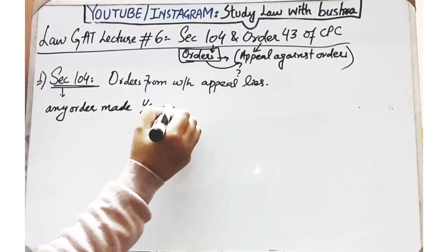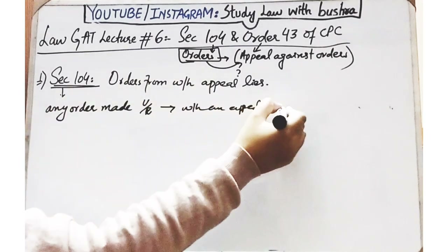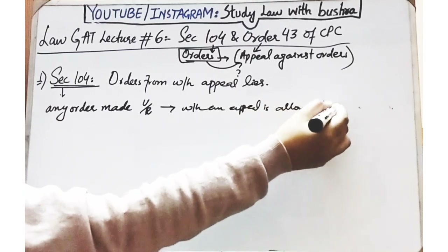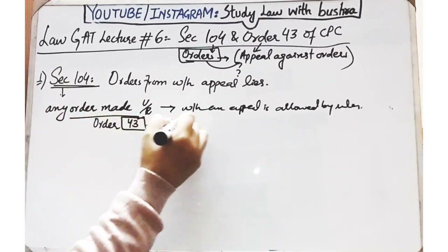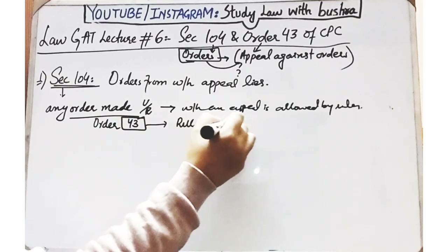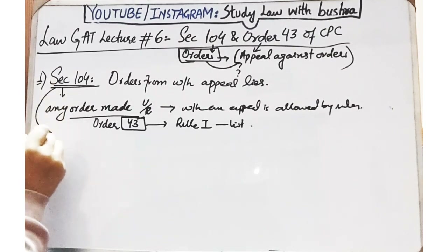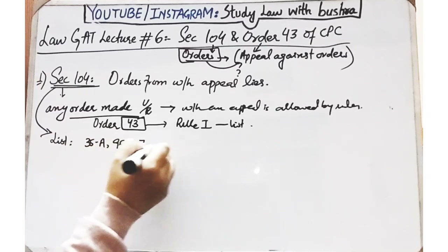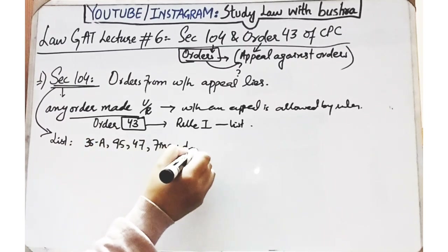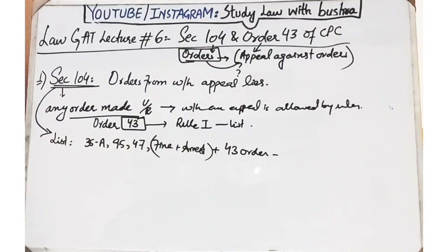Clause i kehti hai: any order made under the rules from which an appeal is expressly allowed by rules. Yeh clause basically keh rahi hai ke Order 43 ka Rule 1 dhekhen to usme bhi ek list batai gai hai ki kin cases mein appeal file kar sakti hai. So Section 104 ki list ke according aur Order 43 ke Rule 1 ki list ke according, jin cases ko mention kiya hai un mein aap appeal file kar sakti ho.